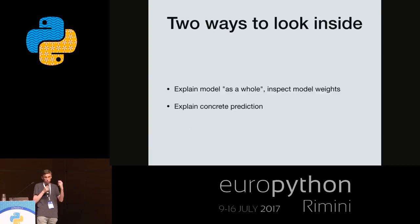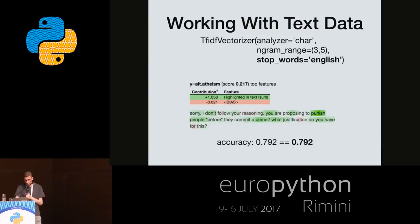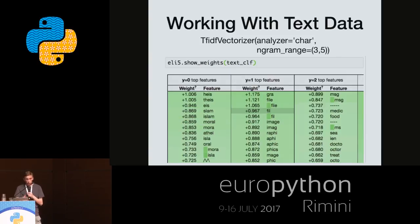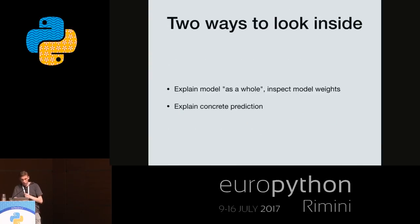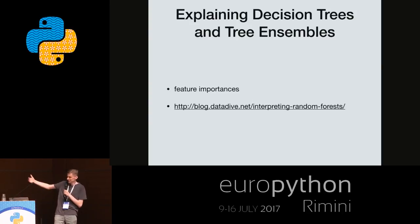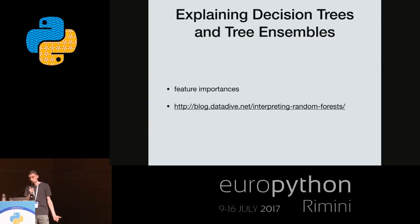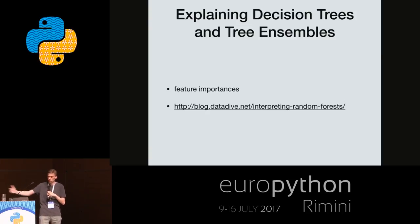There are two main ways to look inside models. You can see the model as a whole and inspect its weights, or you can explain concrete predictions of the model. Both ways are useful. It seems I spent too much time talking about pizza, so I won't have time to discuss all my slides. So far I was talking only about linear models, but of course there are methods to inspect other models as well — like for decision trees and tree ensembles, you can use feature importances, and there is a way to explain predictions of these models.